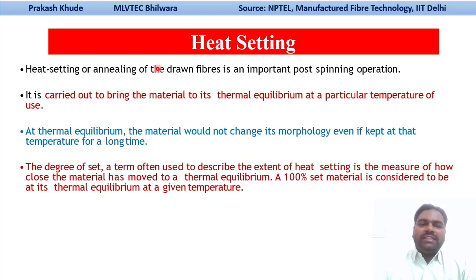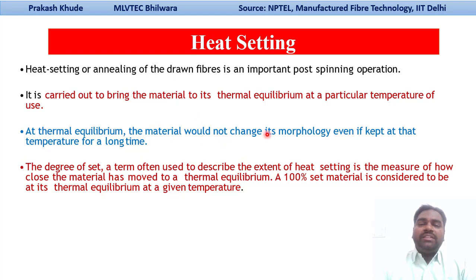Heat setting is most important for the spinning process. Heat setting is carried out to bring the material to the thermal equilibrium stage at a particular temperature of use. At thermal equilibrium, the material would not change its morphology even if it has been kept longer at that same temperature. That is the main advantage of the heat setting process — we are ultimately bringing the material to its thermal equilibrium stage.